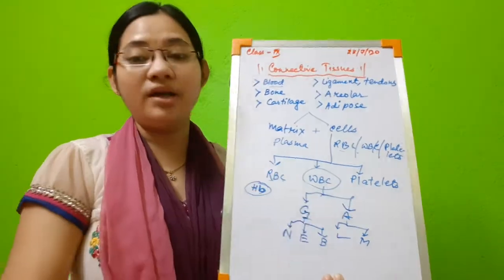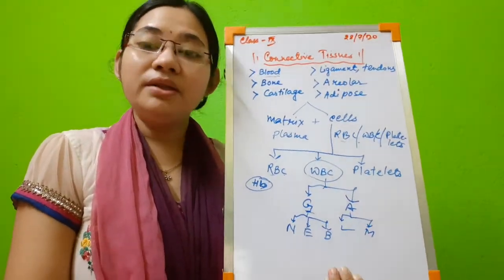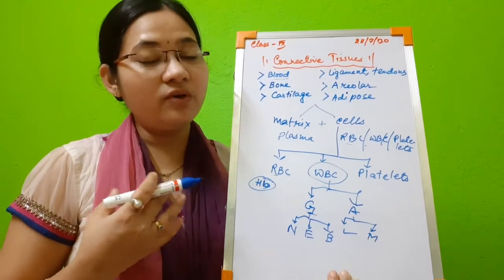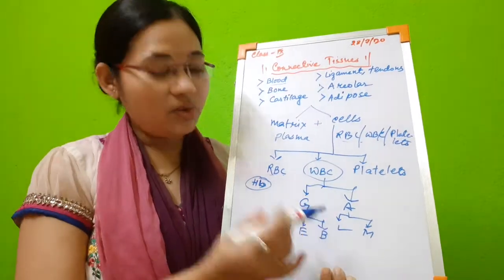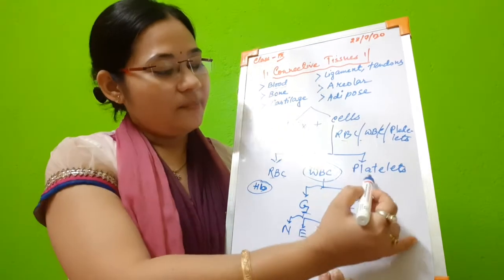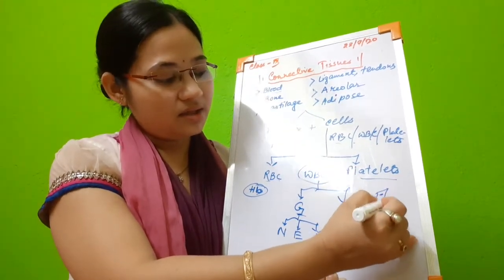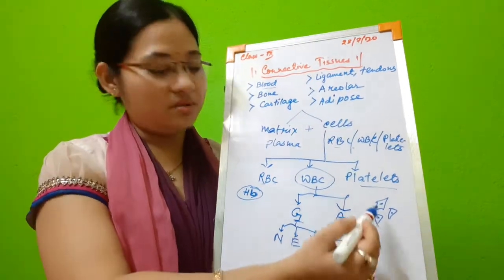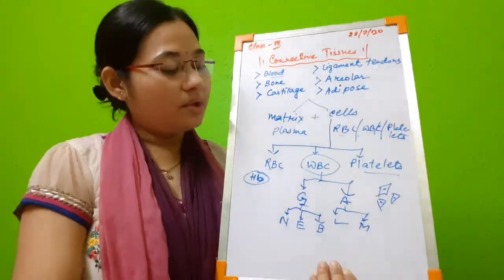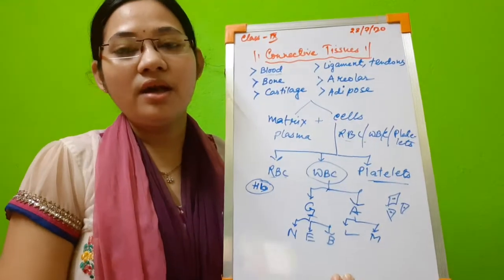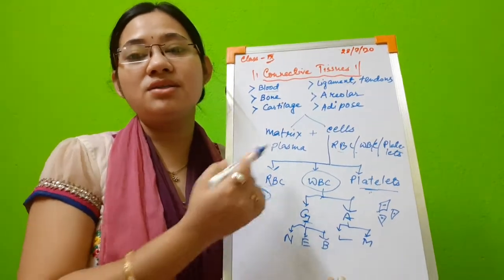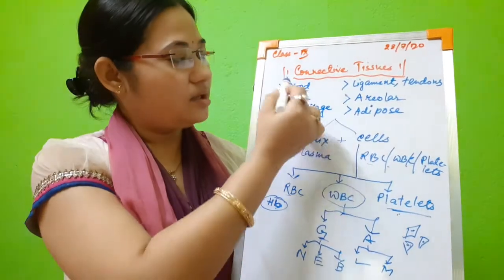White blood cells do not have hemoglobin but they provide immunity to our body. They release certain chemicals which protect our body from foreign substances, and sometimes they also phagocytose foreign substances like bacteria, fungi, and viruses. Platelets are plate-like structures. They are nucleated and their important function is to help in blood coagulation by releasing a chemical that helps in clotting of blood.